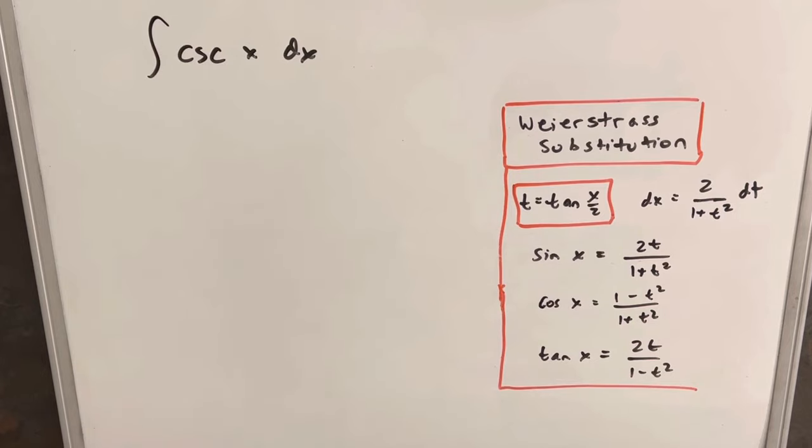Hey, we have on the board the integral of cosecant x dx. And you might be wondering why am I doing such a simple integral? Well, I wanted to do it using the Weierstrass substitution, which I have over here on the right. It's actually a pretty fun problem doing it that way.